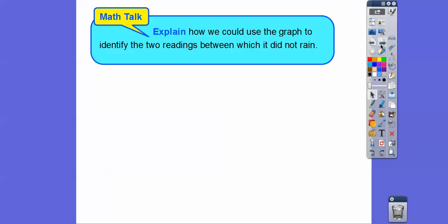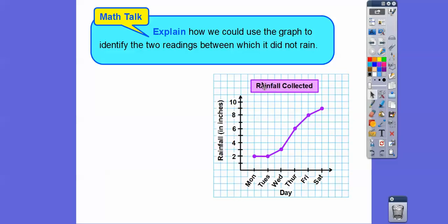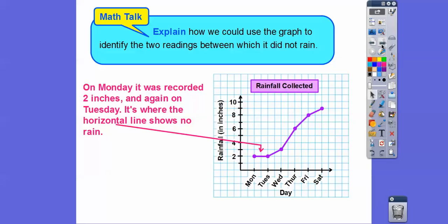And then explain how we could use the graph to identify the two readings for which it did not rain. Well, when it didn't rain was when it stayed the same at 2 inches from Monday to Tuesday right there. It's the horizontal line right there. It didn't increase at all right there. So on Monday it was recorded at 2 inches and again on Tuesday. So it's just where the horizontal line shows on that.